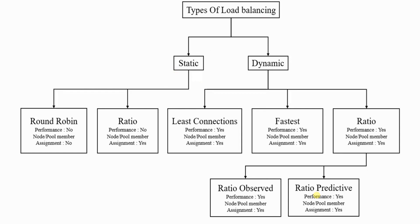Dynamic load balancing is further classified into three different load balancing methods: least connection, fastest, and ratio. Dynamic ratio based load balancing is further classified into ratio observed and ratio predictive.